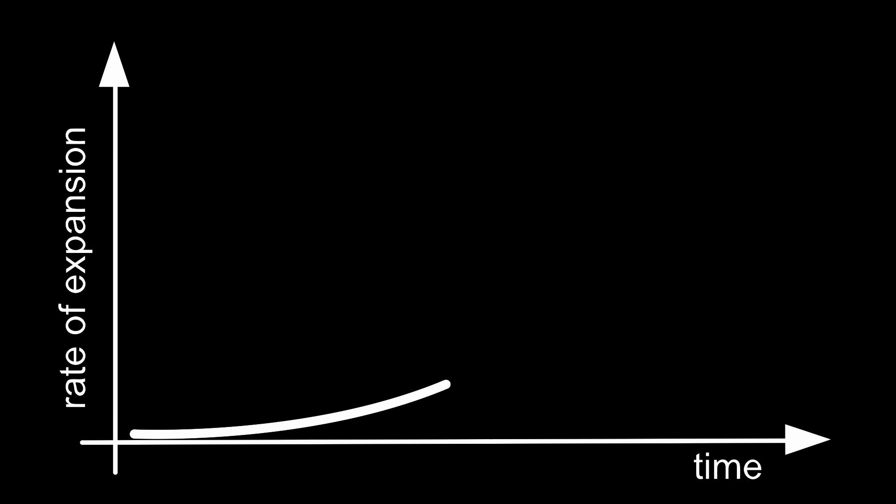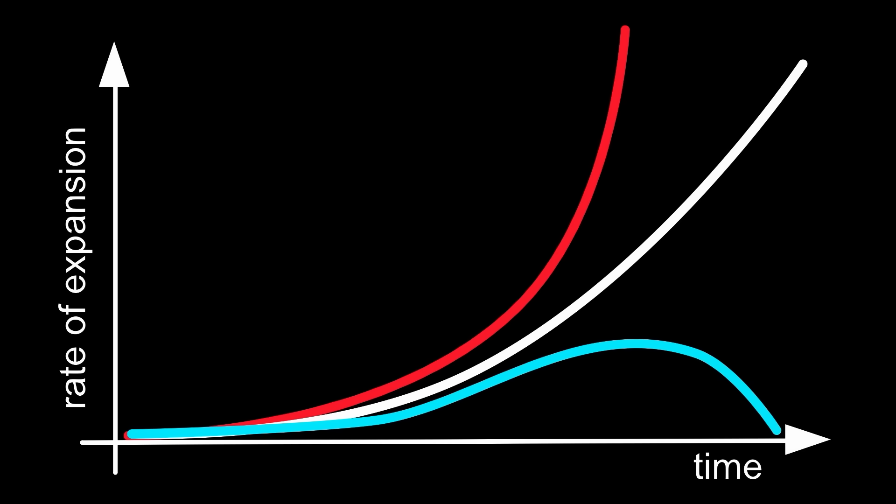For one thing, it tells us something about the ultimate fate of our universe. If dark energy is constant then the expansion of the universe will keep on accelerating forever. Eventually it'll tear everything apart, even atoms. It's sometimes called the big rip. But if dark energy weakens as seems to be the case or goes maybe even all the way to zero,